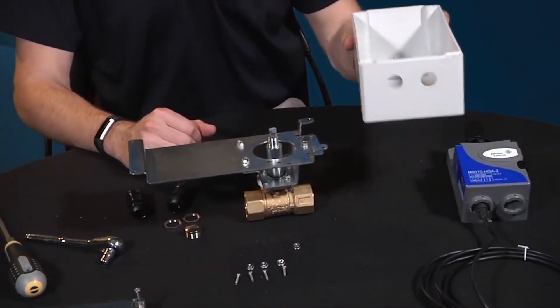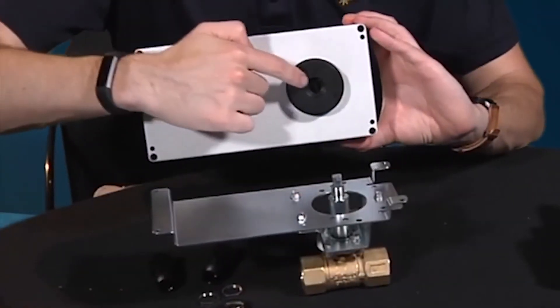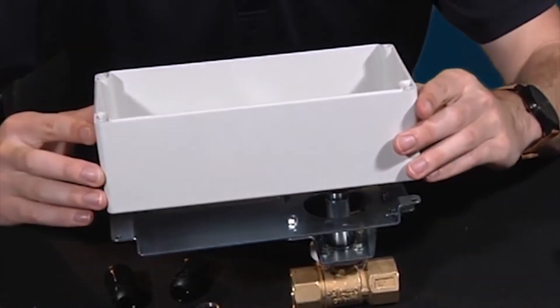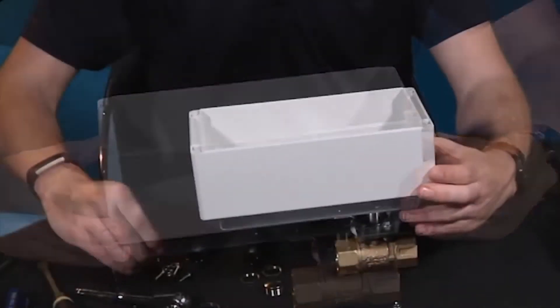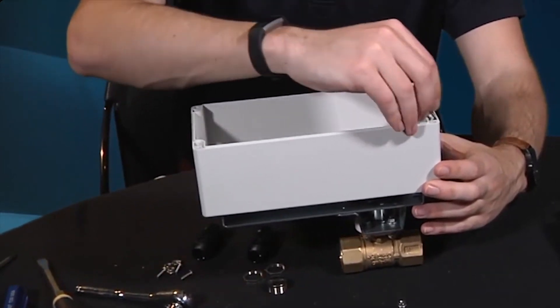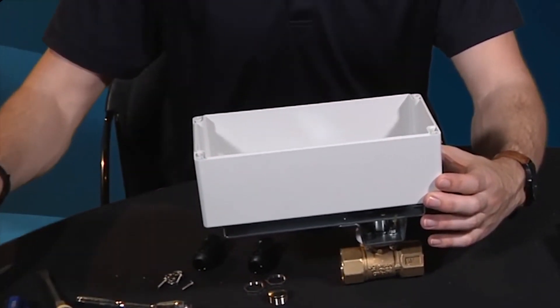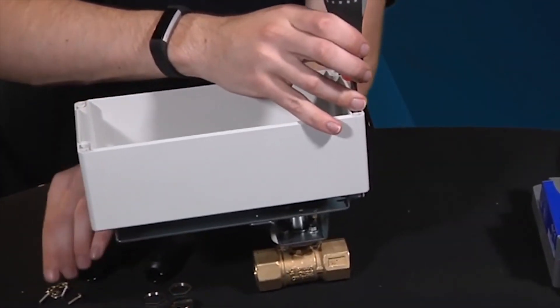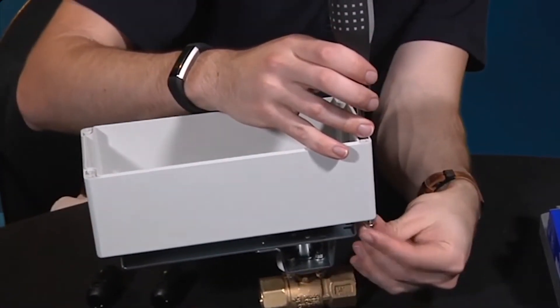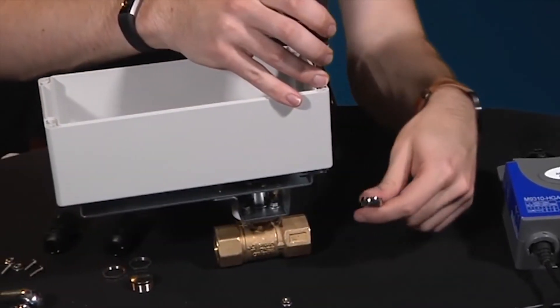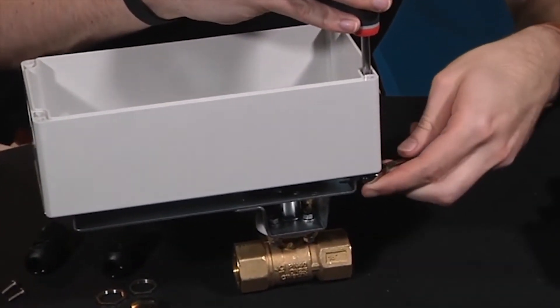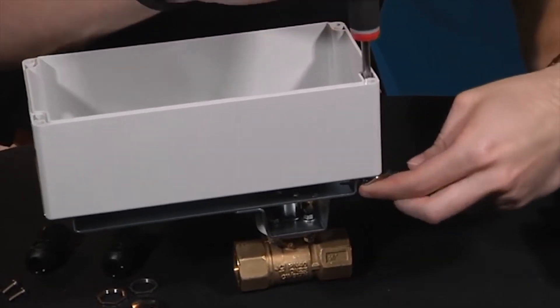Install the WeatherShield base and seal assembly on the WeatherShield enclosure mounting bracket. Secure using the four number six half inch screws and nuts in each corner using the Phillips head screwdriver and 11-32 inch wrench. Tighten the screws to a recommended torque of 9 to 12 inch pounds.